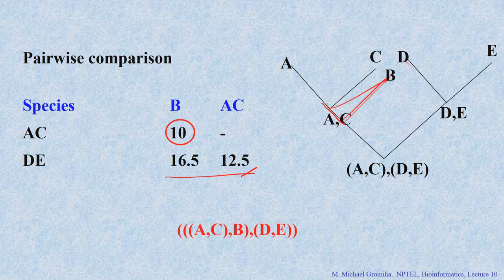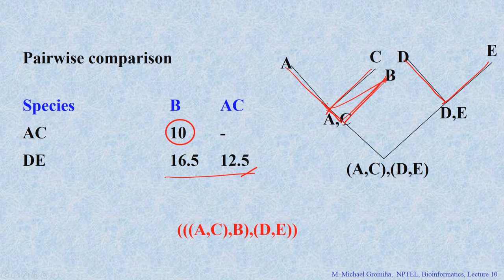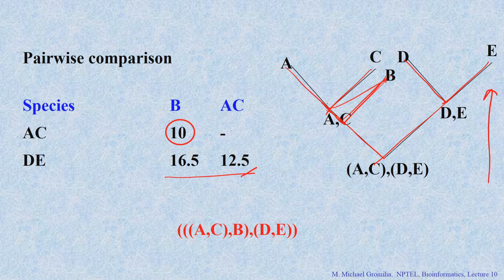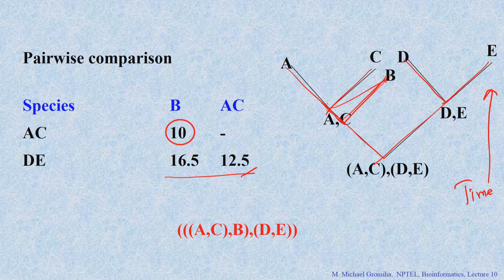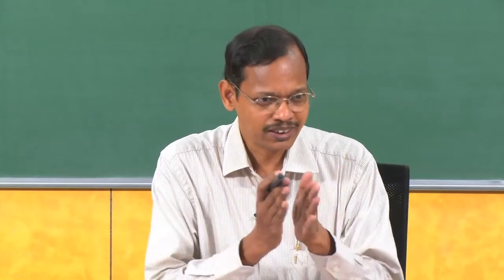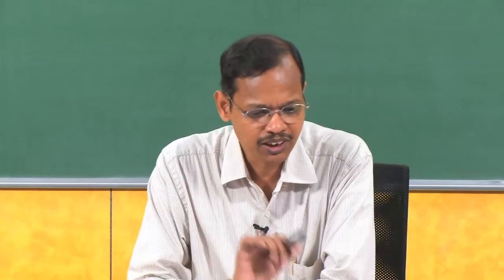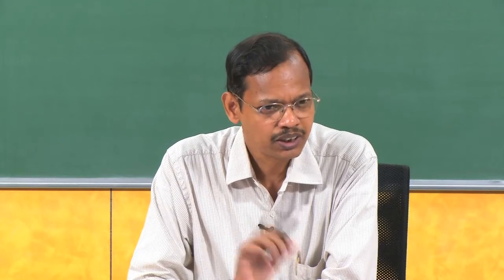From this we can construct the tree: D and E are close to each other, A and C are close, AC is close to B, and this group connects with DE. The next question is how long it takes to evolve from one organism to another — can we estimate the time? The number of mismatches tells us: fewer mismatches means less evolutionary time; more mismatches means more time.